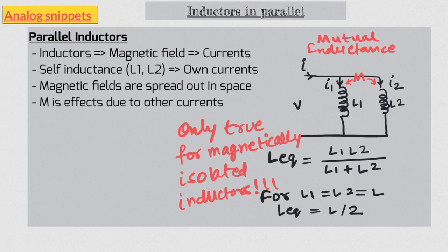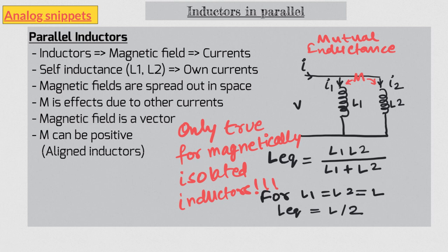To complicate matters further, magnetic field is a vector quantity, so magnetic fields can either add or subtract. As a result, we can either have positive mutual inductance when inductors are aligned, or negative mutual inductance when inductors are anti-aligned. As a result, the equivalent inductance of two equal parallel inductors of value L can change anywhere between 0 and L, depending on the value of mutual inductance.